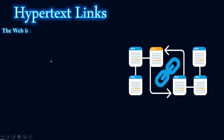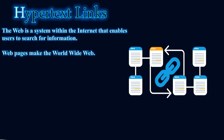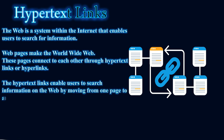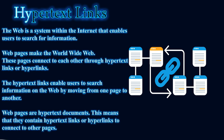Hypertext links: the web is a system within the internet that enables users to search for information. Web pages make up the World Wide Web, and these pages connect to each other through hypertext links, or hyperlinks. Hypertext links enable users to search information on the web by moving from one page to another. Web pages are hypertext documents, meaning they contain hyperlinks to connect to other pages.